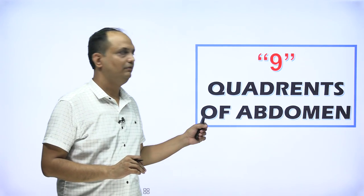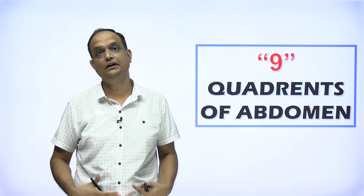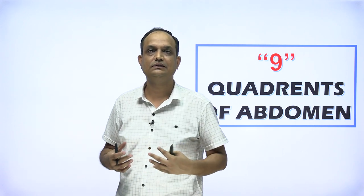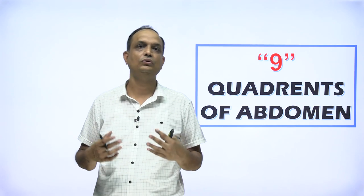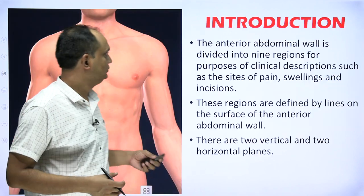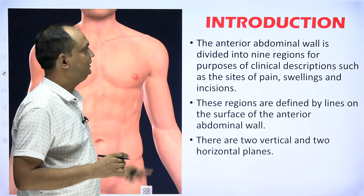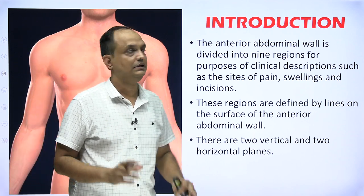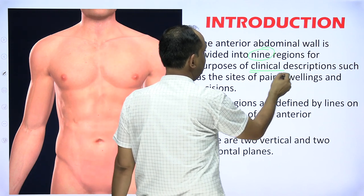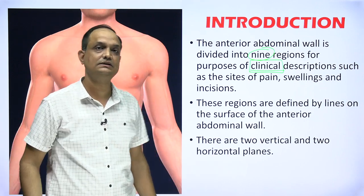Hello students, today we will discuss the quadrants of the abdominal wall. The anterior abdominal wall has nine regions present. We will discuss the importance of these quadrants and how to do the surface marking in your exams. The anterior abdominal wall is divided into nine regions, mainly for clinical purposes.